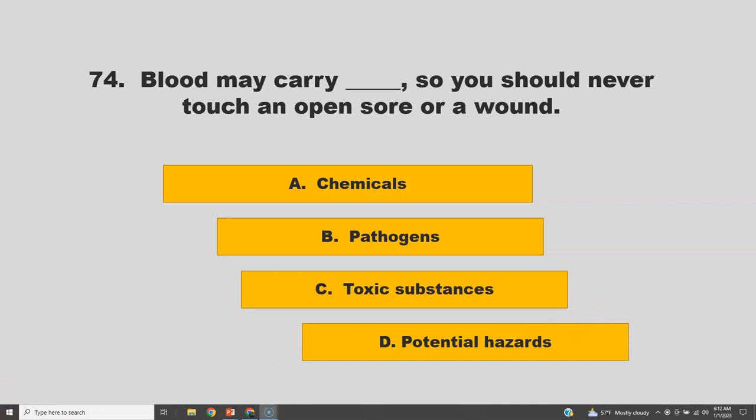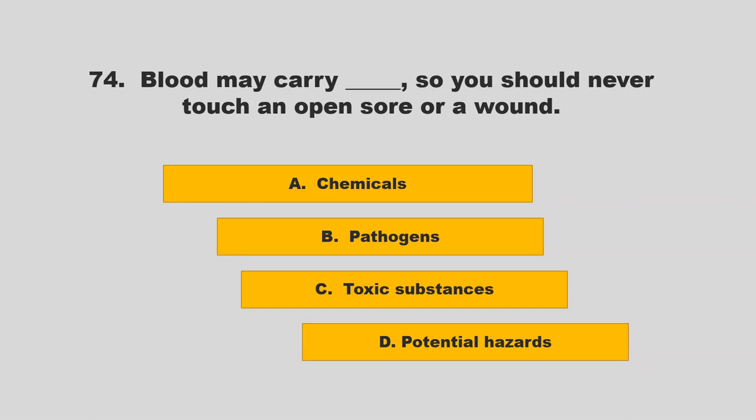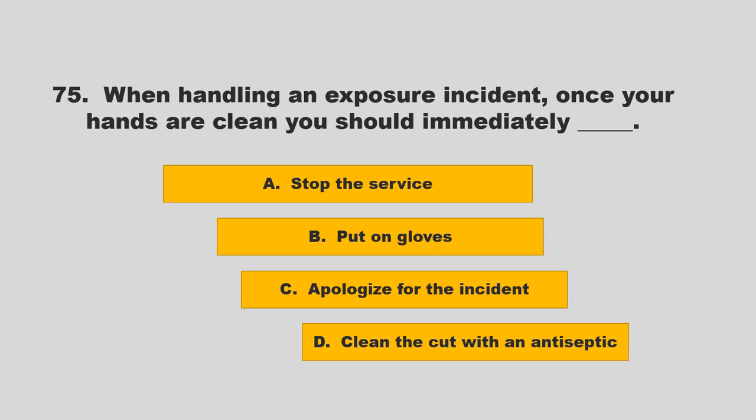Options include chemicals, pathogens, toxic substances, or potential hazards. The correct answer is B: pathogens.